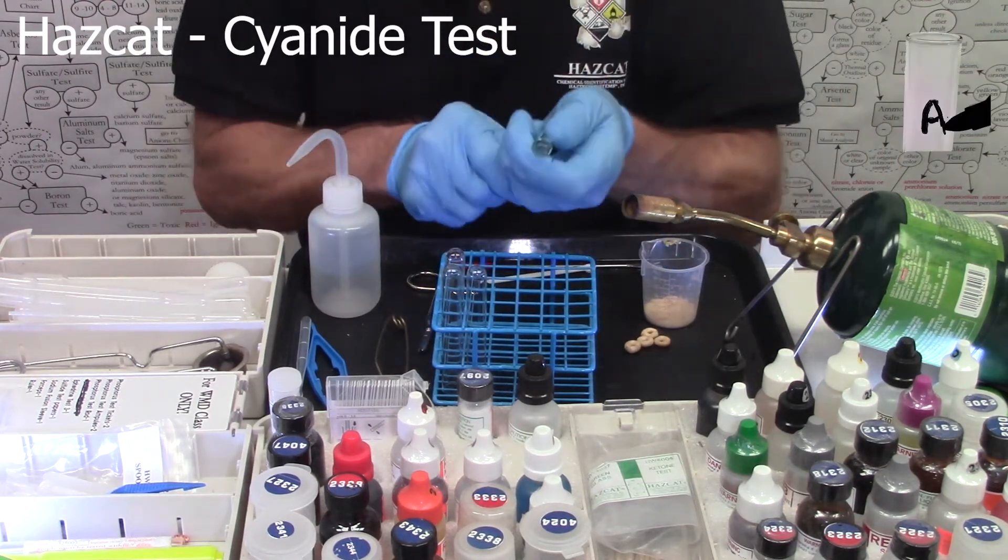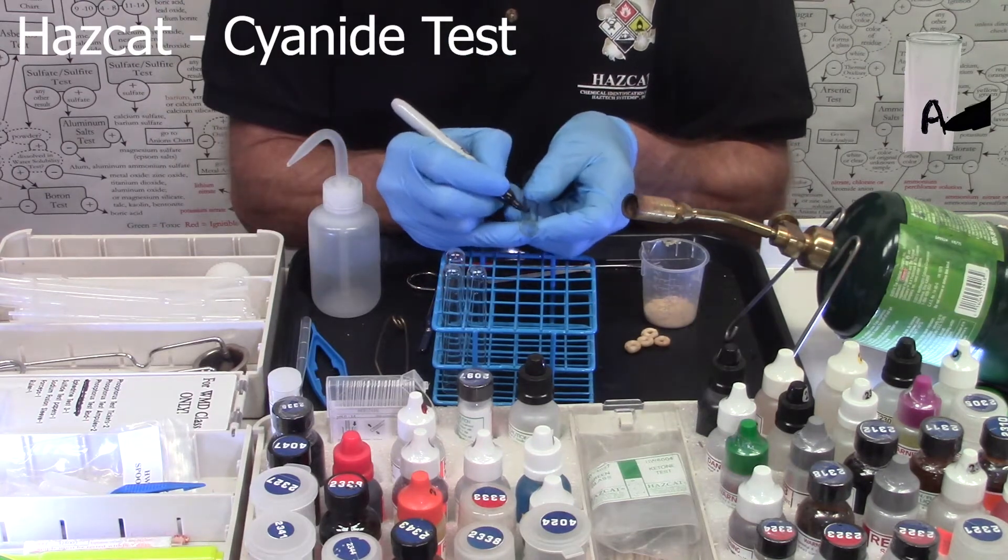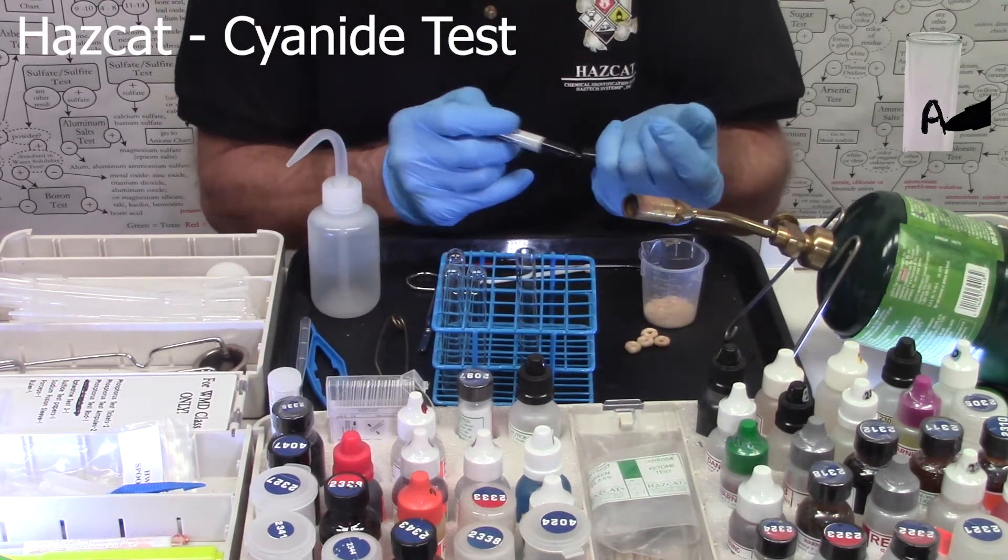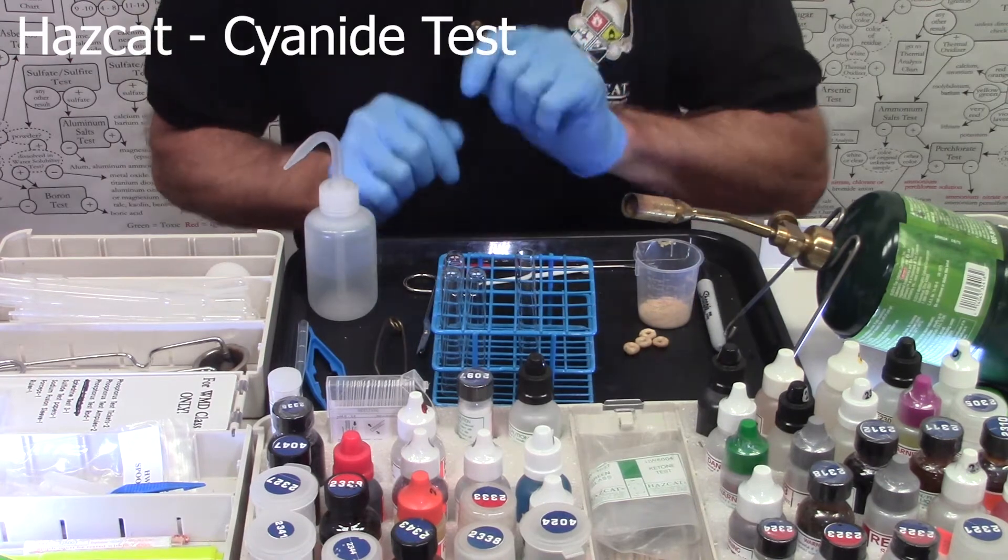We start out by taking a test tube and marking it with an A. We're going to add four things to that.